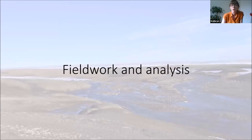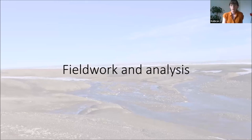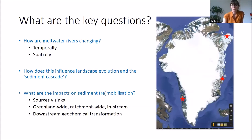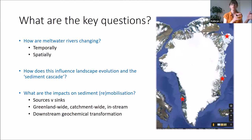I'll briefly talk about how we go about doing this, where we've been working, and the state of play with some of the analysis. The key questions that have come out of this: How are meltwater rivers changing over time and over space? How does that influence landscape evolution on a modern-day scale and over longer time periods? And how does that influence this idea of a sediment cascade from the ice margin downstream — whether to a lake or ultimately offshore?